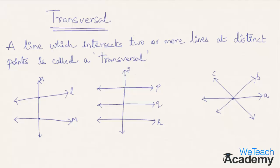Now let's go with the second diagram. Here we have three lines p, q, and r intersected by a fourth line s at three distinct points. That is here, here, and here.